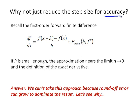If we have a first order finite difference — a forward finite difference — where df/dx equals f(x+h) minus f(x) over h, it will have a truncation error that's proportional to h and the second derivative of f. And we know if h is small enough, then the approximation nears that limit where h approaches zero, which would be the definition of the exact derivative.